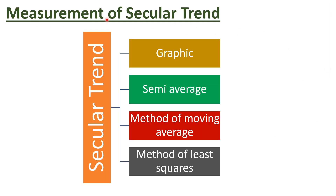To measure the secular trend we have four methods. The first is the graphical method, the second is the semi-averages method, the third is the method of moving averages, and the fourth is the method of least squares. We will see these methods one by one. Today we are going to learn about the graphical method.